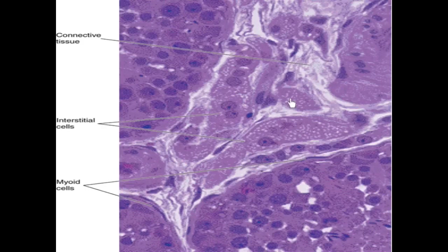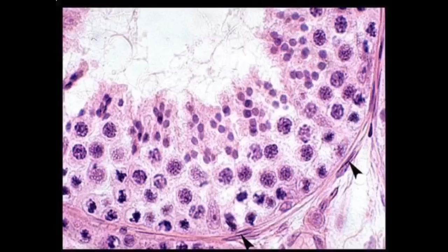All the cells with lipid droplets are the interstitial cells that produce testosterone. By electron microscope, they are characterized by having a lot of smooth endoplasmic reticulum, mitochondria, and lipid droplets, as they secrete testosterone. You can also see the myoid cells and a loose connective tissue in the interstitial tissue. Here again are the myoid cells and the basement membrane.